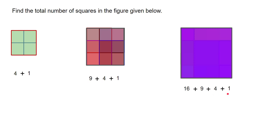So in total we have sixteen plus nine plus four plus one, which is thirty. So there are thirty squares in this four by four figure.